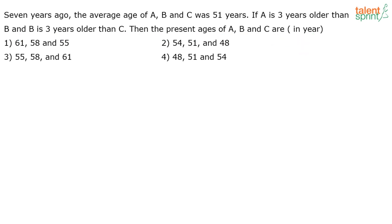There are two key points. First, 7 years ago, the average age of A, B, C was 51 years. As we discussed in our video on averages, if 7 years ago the average was 51, what is the present average? 51 plus 7 — that's 58.